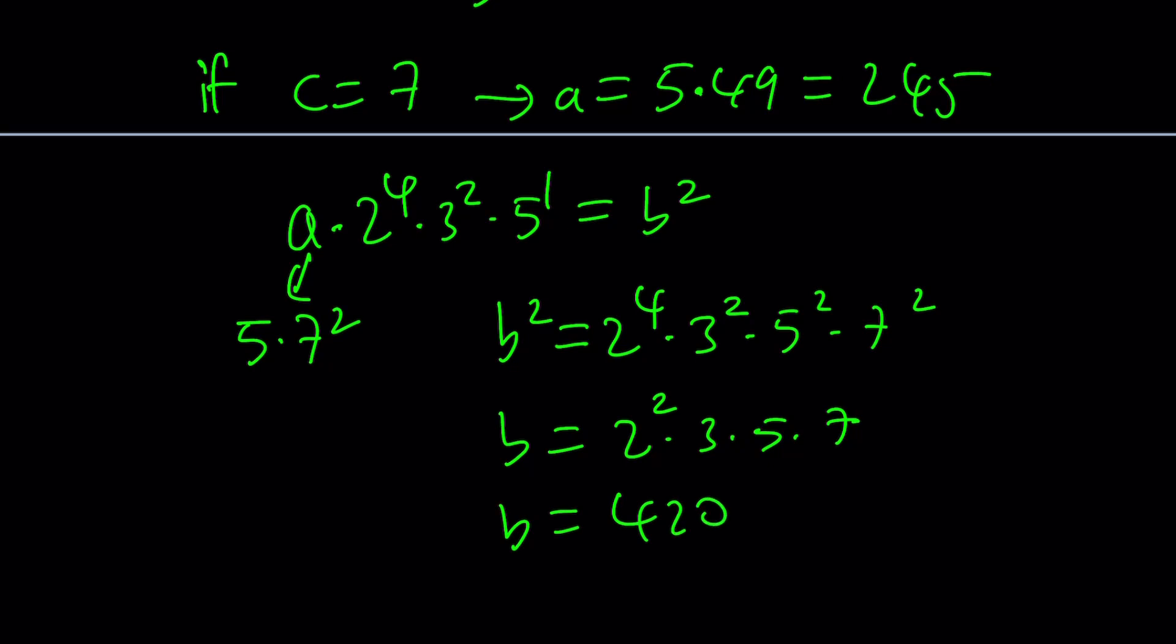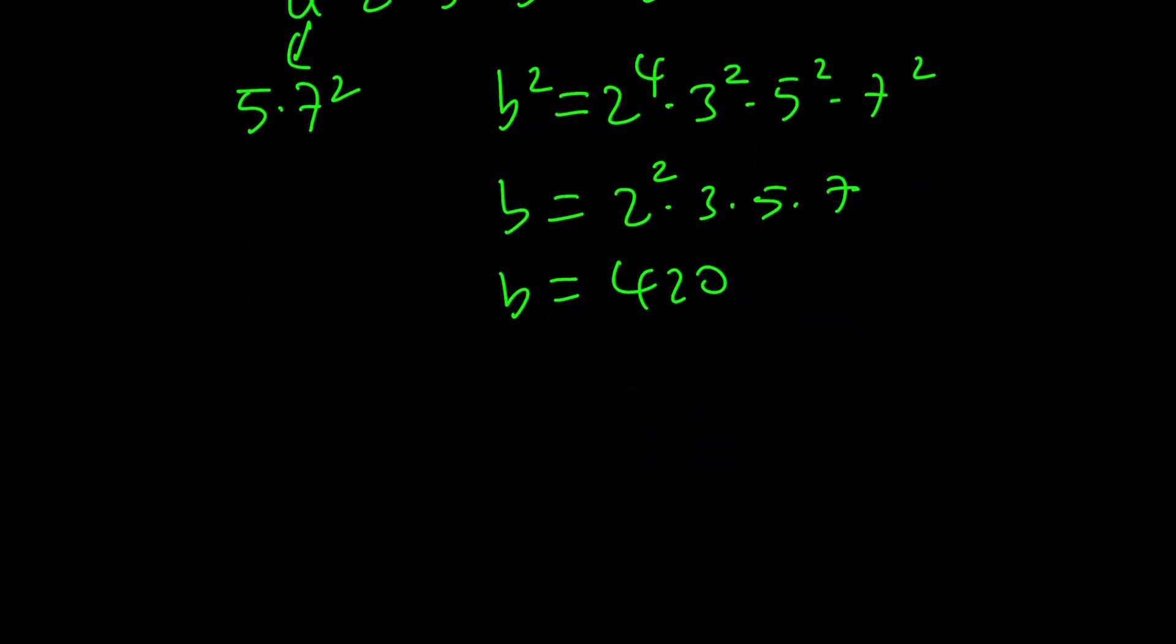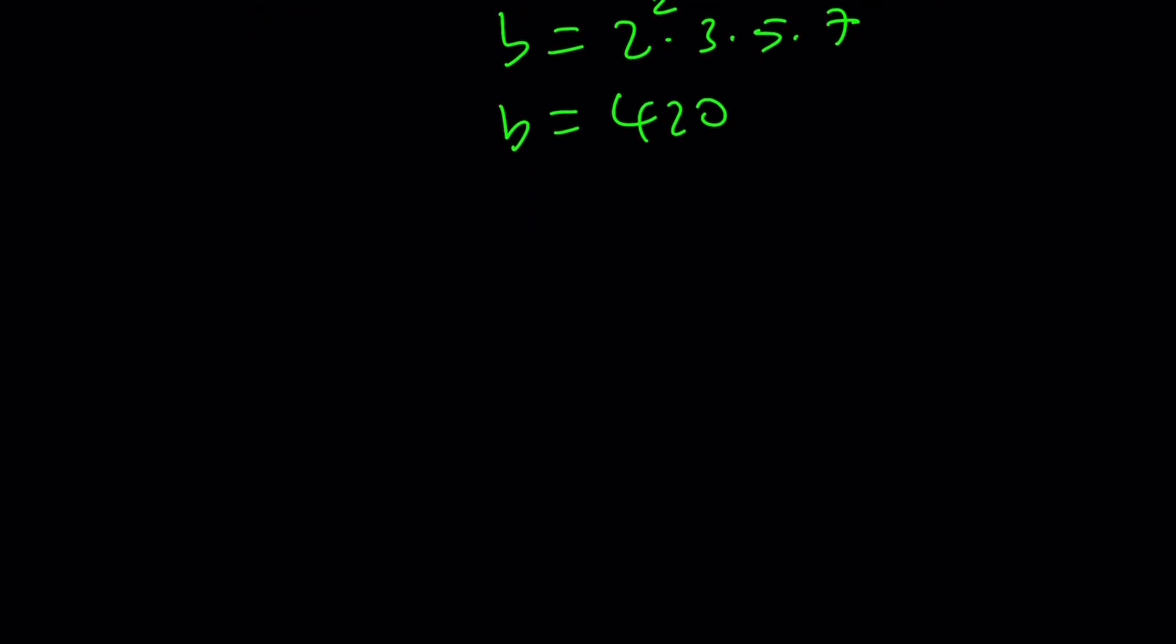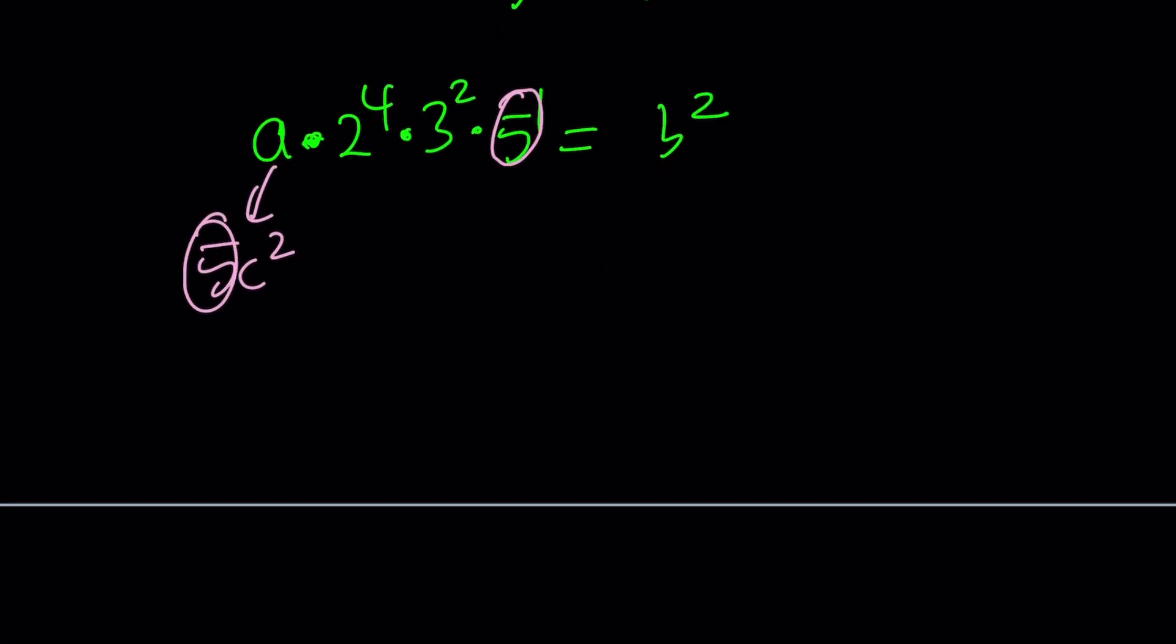By plugging it in, you could also find C or other values. Let's go ahead and express this in general form. Let me write one more time, a times 2 to the 4th times 3 to the 2nd times 5 to the 1st equals b squared. And we just said that a is equal to 5C squared. Let's go ahead and plug that in. Instead of replacing C with certain values, notice that this 5 is going to make this 5 squared. So we're going to end up with something like this. It's 2 to the 4th, multiply by 3 squared, multiply by 5 squared, and then at the end we have times C squared. And that's equal to b squared.